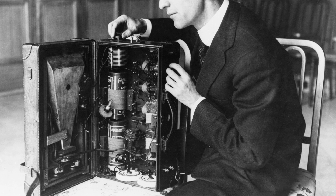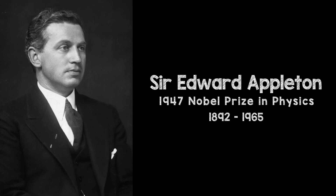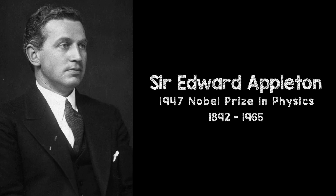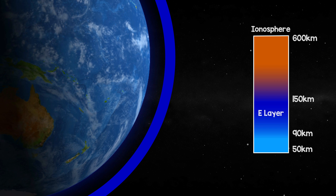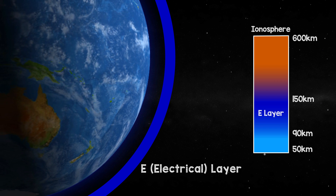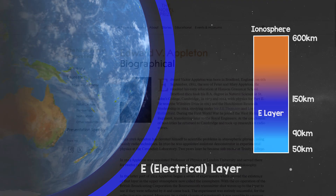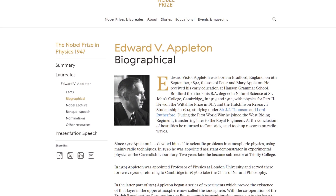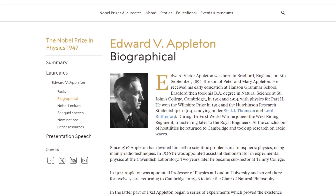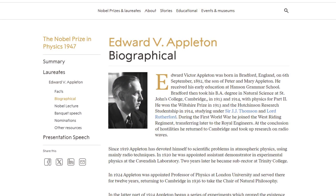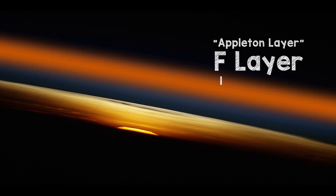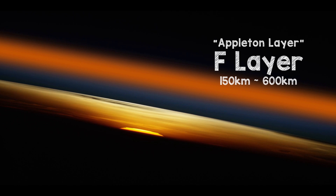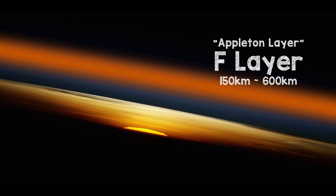A quarter of a century later, in 1927, Sir Edward Appleton, a British physicist, named the conducting layer the E layer, which was an abbreviation for electrical layer. Twenty years later, in 1947, Appleton was awarded the Nobel Prize in Physics for his investigation of the physics of the upper atmosphere, especially for the discovery of the so-called Appleton layer, which we know today as the F layer.